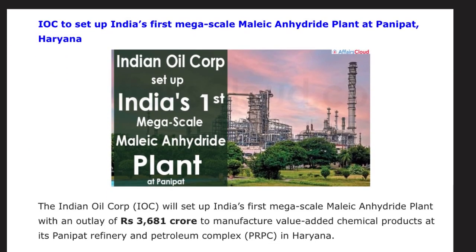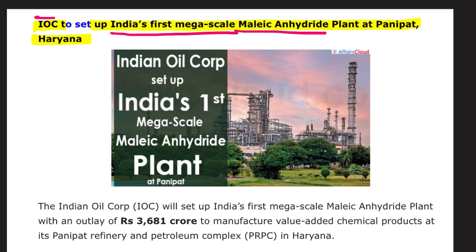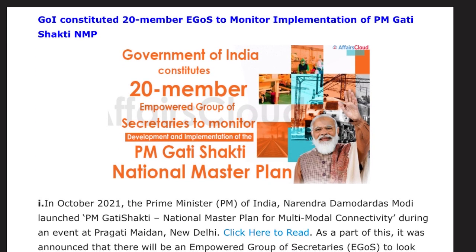Indian Oil Corporation (IOC) is set to establish India's first mega-scale Maleic Anhydride plant at Panipat, Haryana. The question will be direct — the location is Panipat, Haryana. Next, the Government of India constituted a 20-member Empowered Group of Secretaries (EGoS) to monitor implementation of PM Gati Shakti.